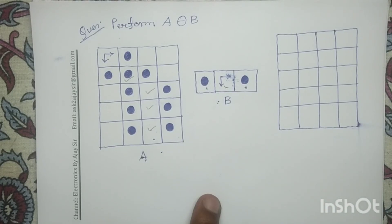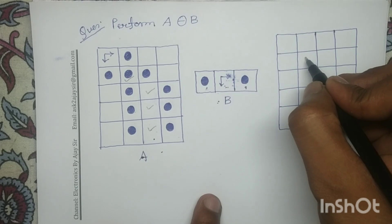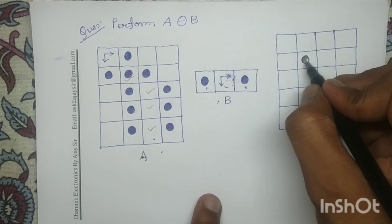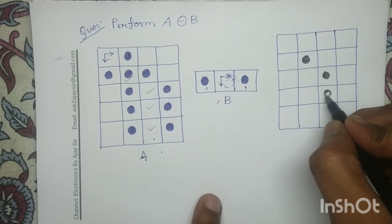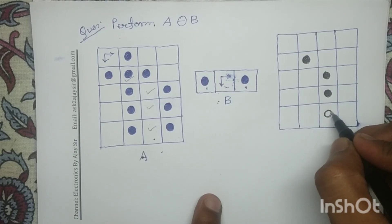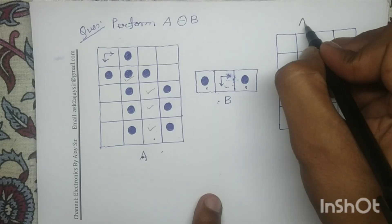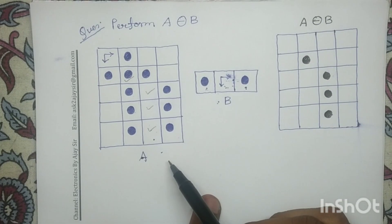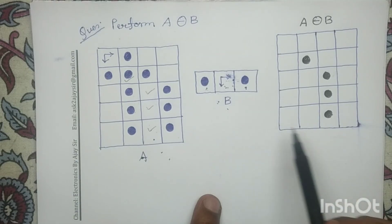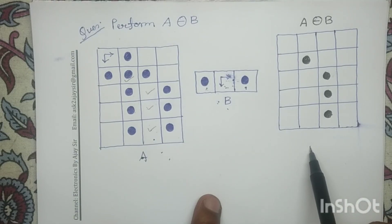So let me mark these pixels in the output image. This is our output image, that is A erosion with B. For this given input image, using this structuring element B, we have performed A erosion with B. And with this, this question is over. Thank you.